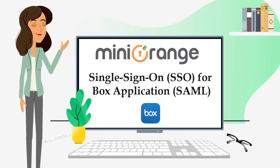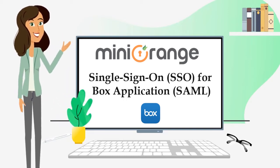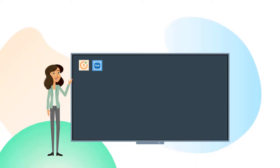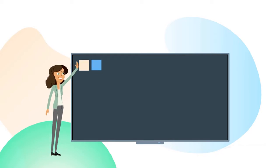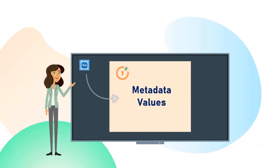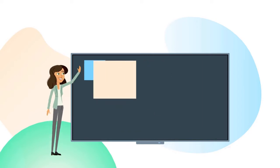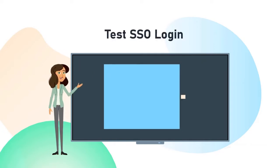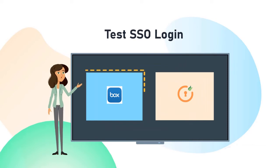In this video we are going to try and set up single sign-on for the Box application using the SAML protocol. SSO configuration requires metadata values from both the Box application and MiniOrange. First we will log in to the MiniOrange dashboard and fill in the metadata values obtained from Box, then log in to Box and fill in details from MiniOrange. After that we will test the single sign-on login to Box using MiniOrange as an IDP.